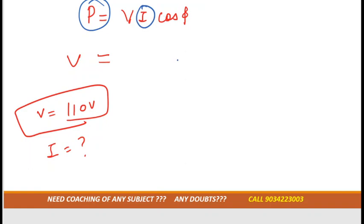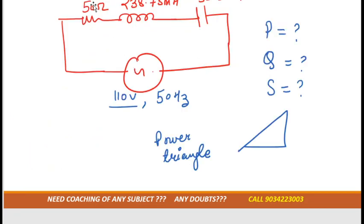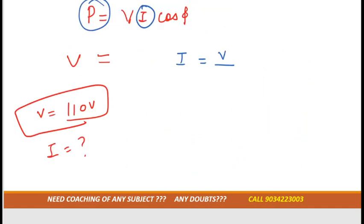There is a formula according to Ohm's law, I is equal to V by R. But as you can see there is a combination of RLC, so instead of resistance we will take I is equal to V divided by Z. For that we should know the value of Z as well.